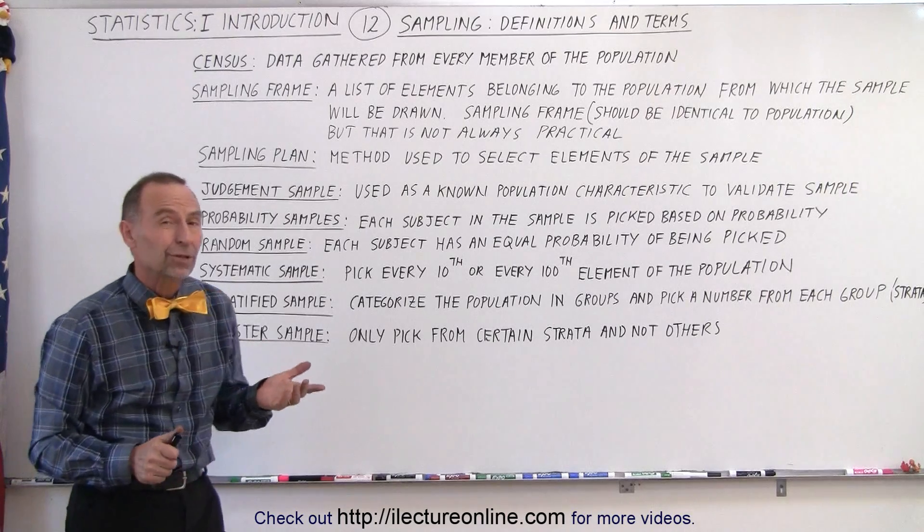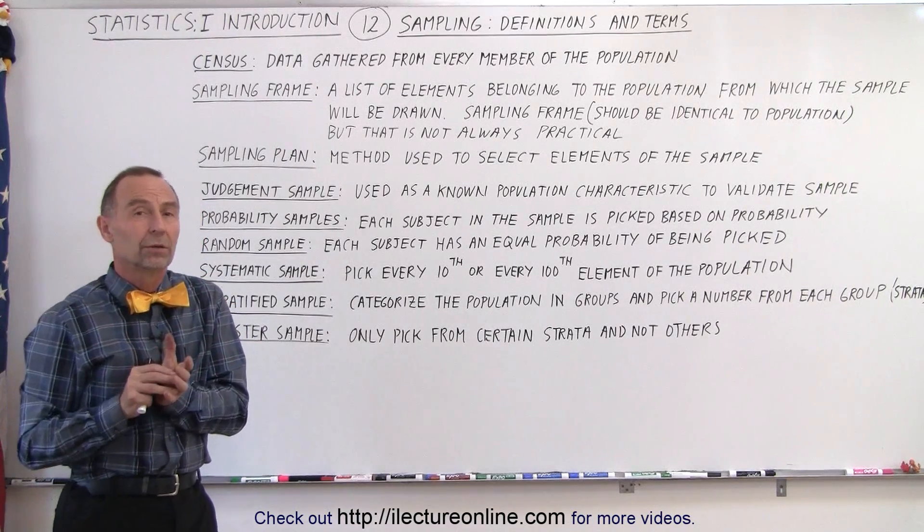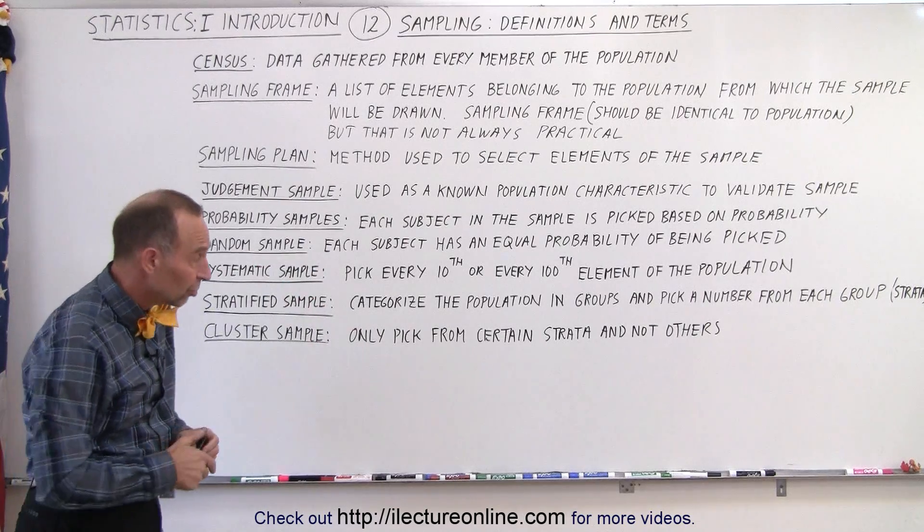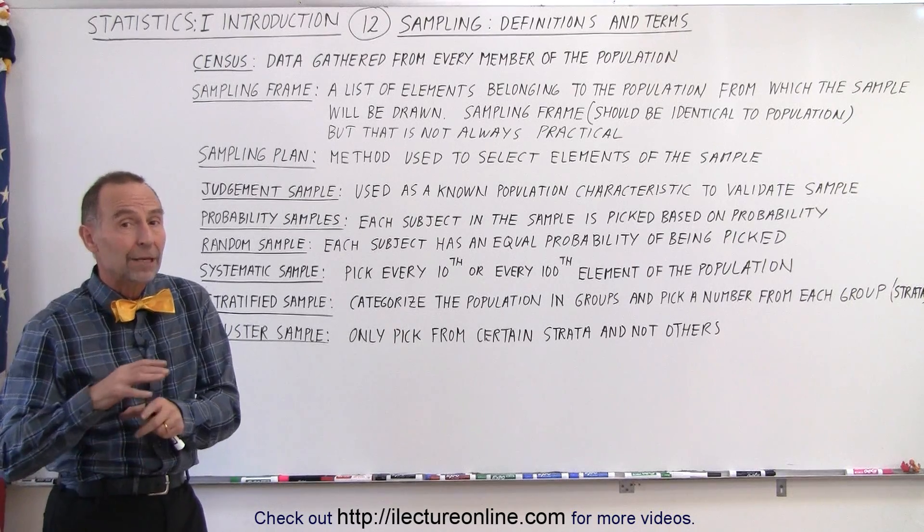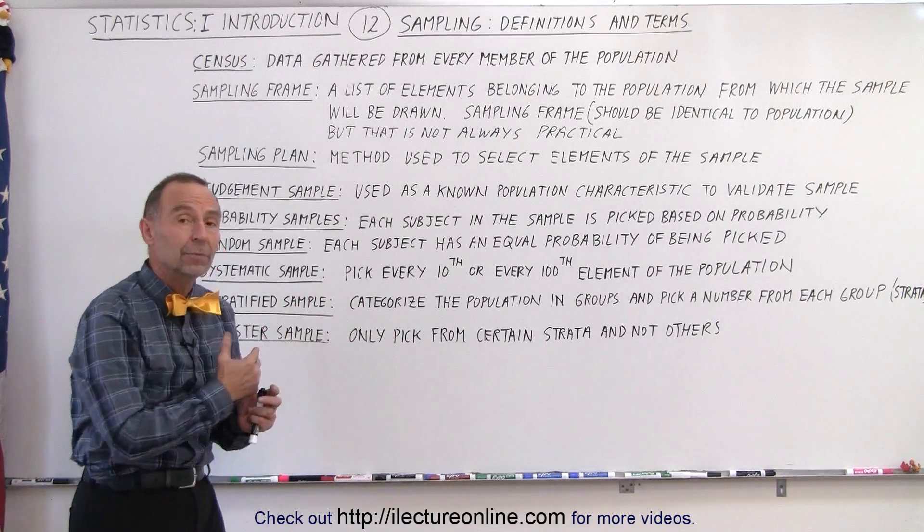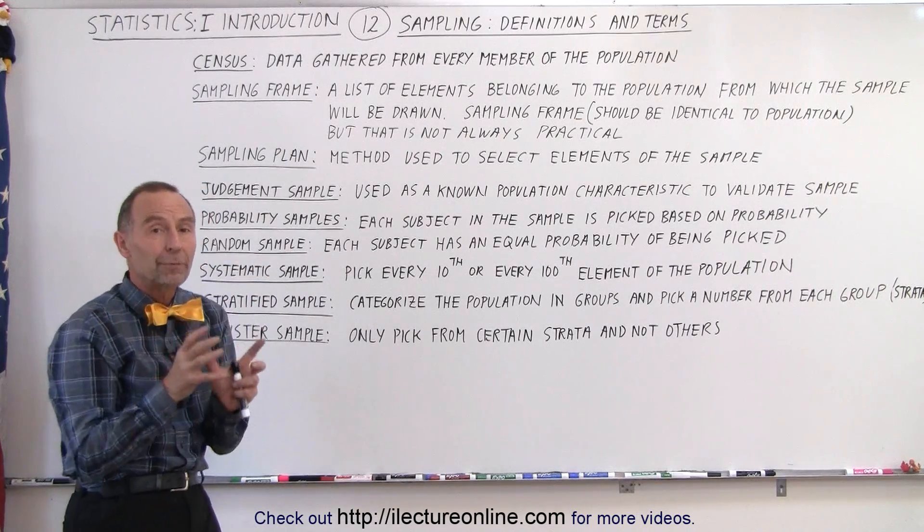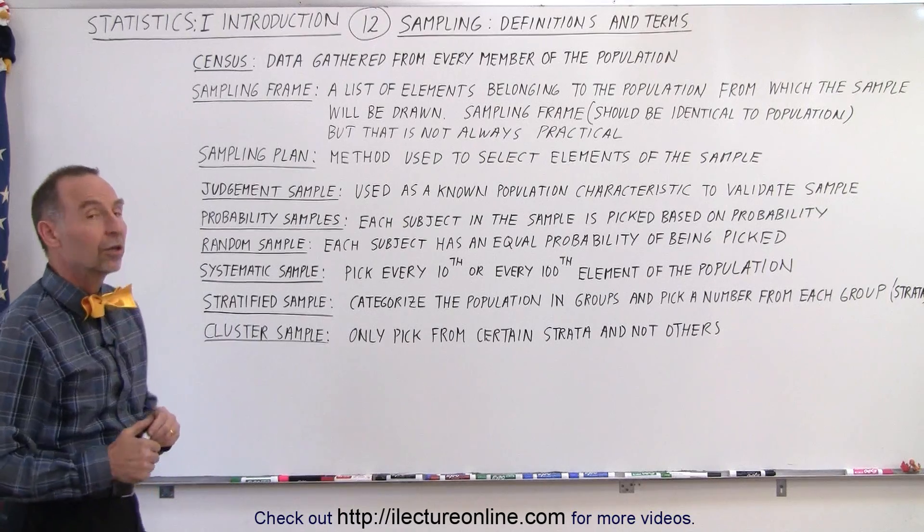Or you may want a cluster sample. You may not want to pick the same number of people from each group that makes up your total population. You may simply want to pick more farmers and less engineers, or maybe no factory workers at all. And so that way you're going to stratify them, take different strata, and only pick from certain strata and not from others. And that's considered a cluster sample.